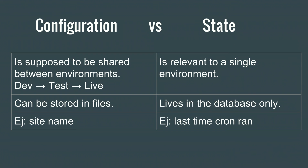Configuration versus state. Configuration is something that will move through your development, staging, and production environments. State is only relevant to a specific environment. For example, the last time Cron ran is state — only relevant to the current website. But Drupal's maintenance mode setting is state too: when you put the live production website in maintenance mode so only administrators can access it, that doesn't change your staging or development environment. Configuration is what moves between environments; state is what stays specific to each environment.